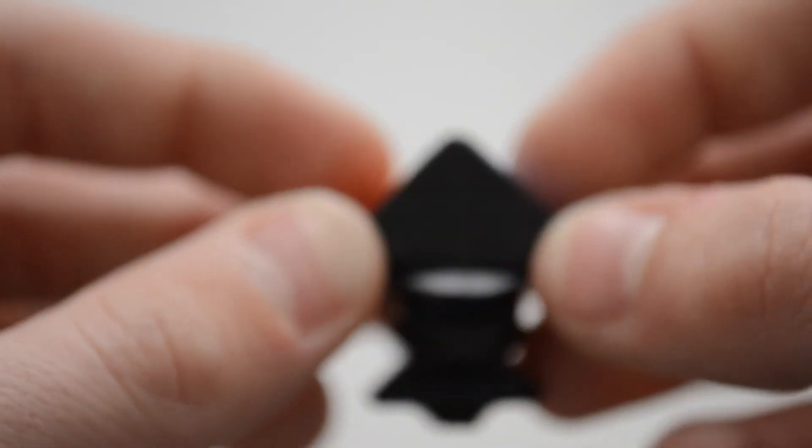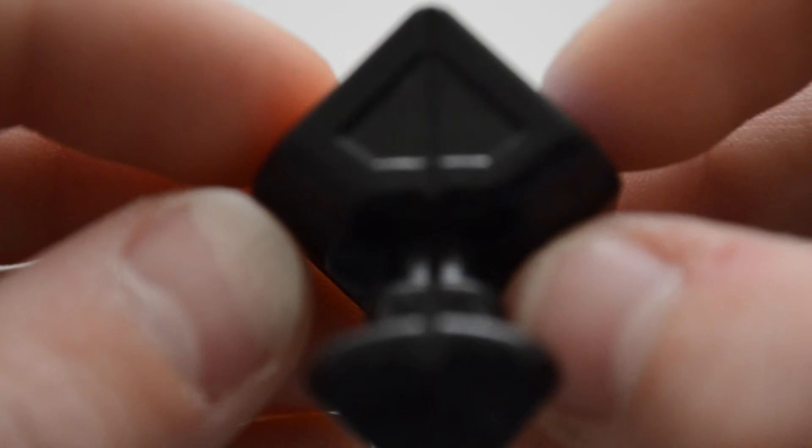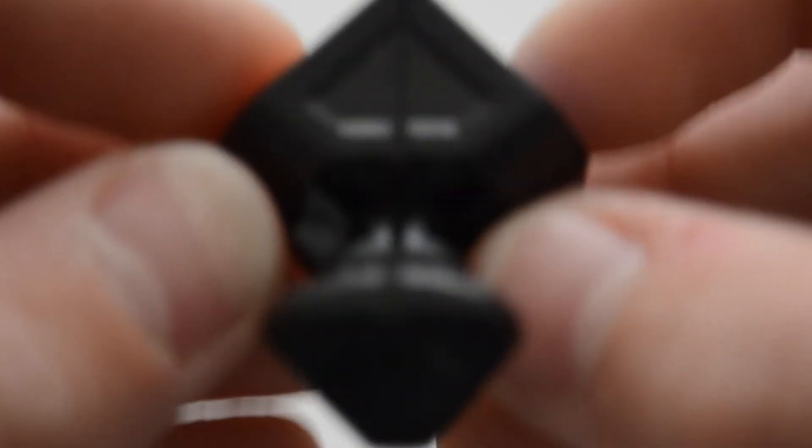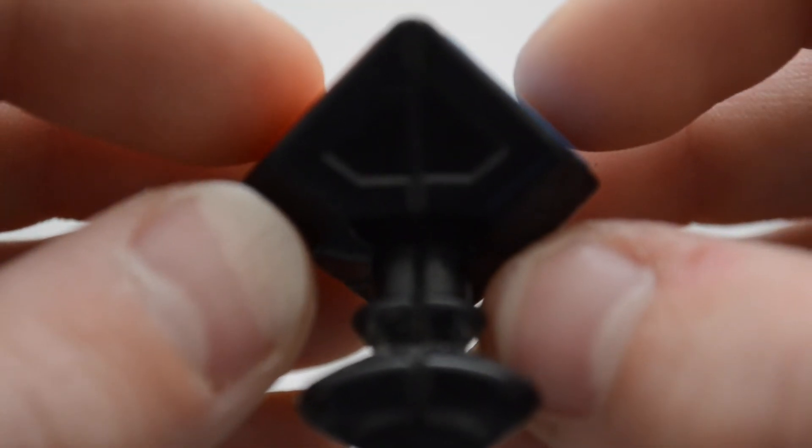The edge pieces have little notches to help keep an alignment. The corners have trenches to prevent friction. The trenches on the V2 are bigger than the V1.